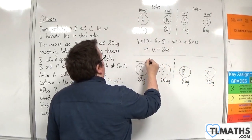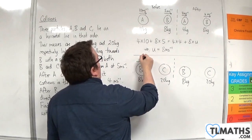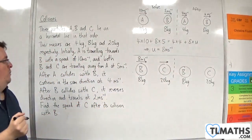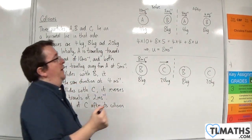So we now know that B is travelling towards C at 8 metres per second. C is still travelling to the right at 5 metres per second.